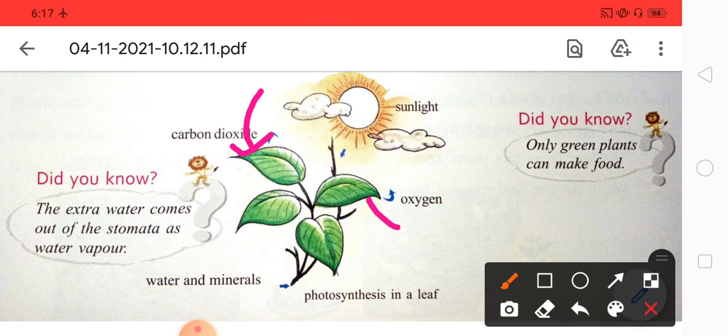And the oxygen when it comes up in this process is going out through the stomata. So in this process, the total photosynthesis occurs and the sugar is formed.